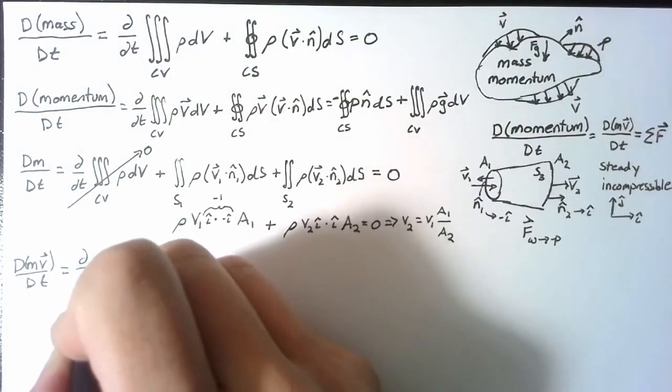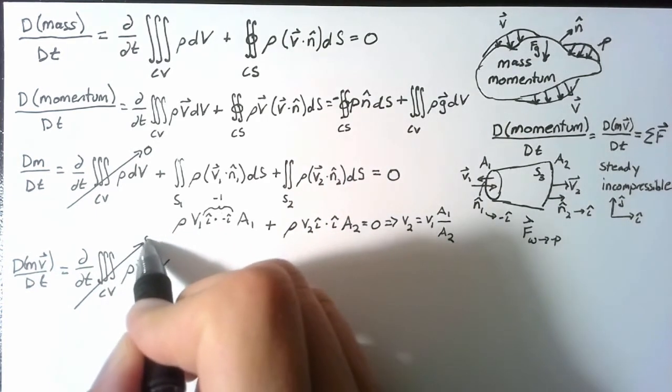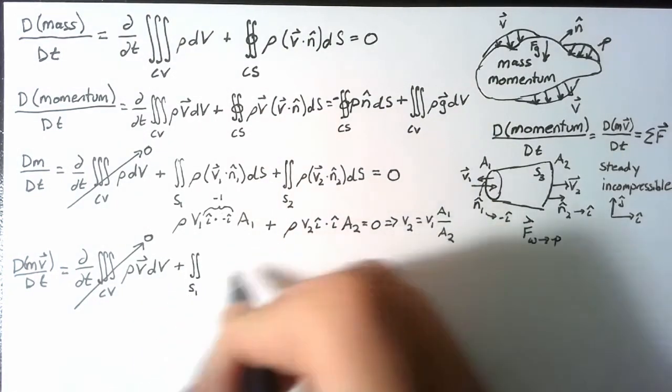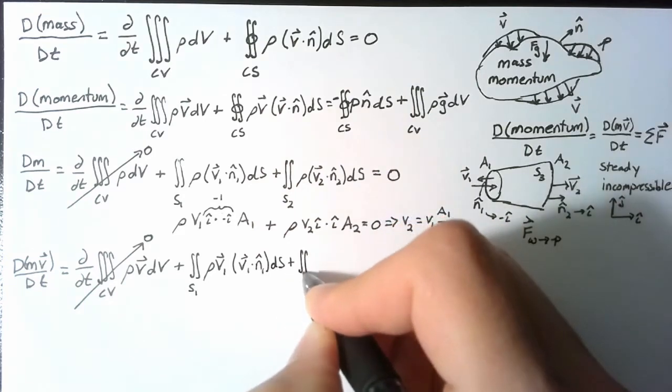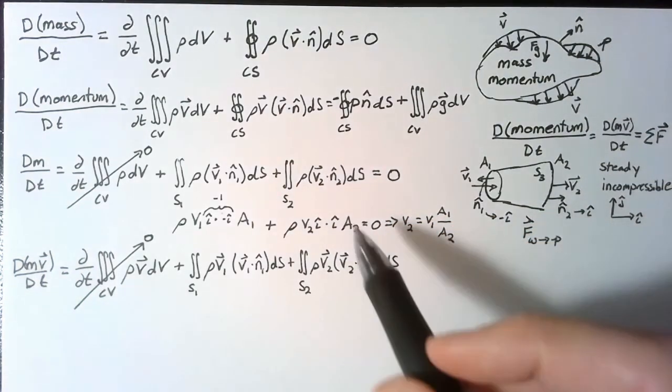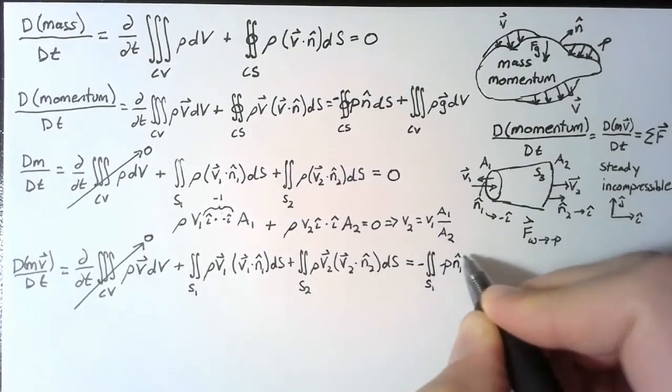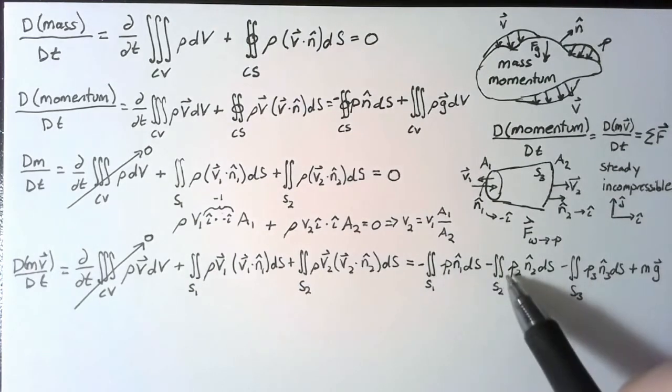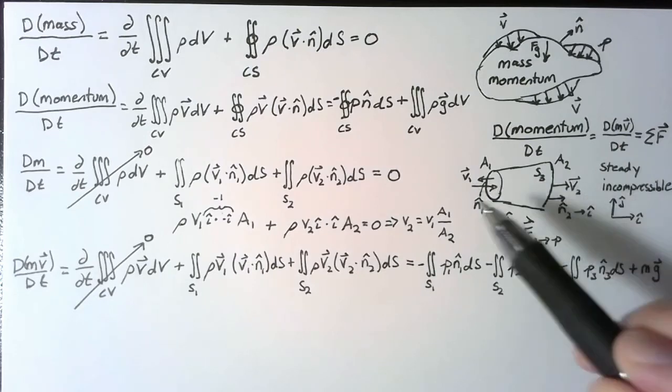So let's write the momentum equation. Since we're still assuming that this is steady flow, we can say that this term is identically zero. We don't have to worry about it. Once again, we're going to split the control surface into two separate components. And this is the momentum leaving through convection. Now we also need to write the forces. We have three surfaces to consider pressure on, and then we'll just write m times g. So these first two terms are the pressures of our water acting on faces one and two.